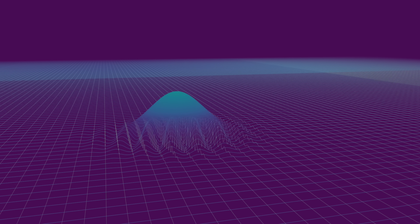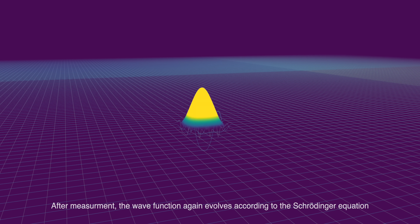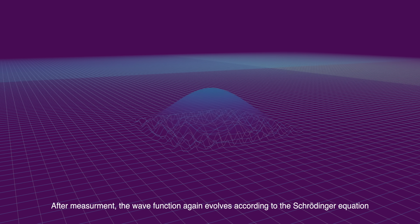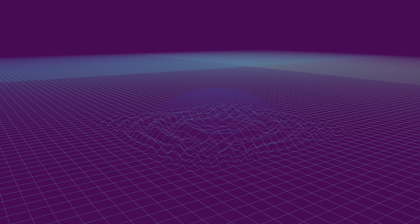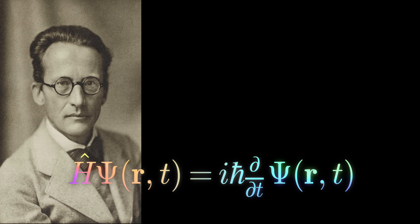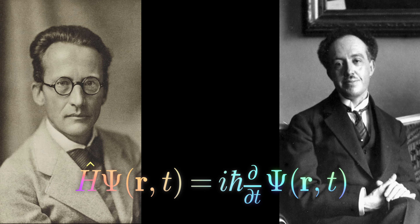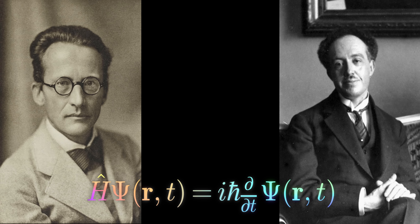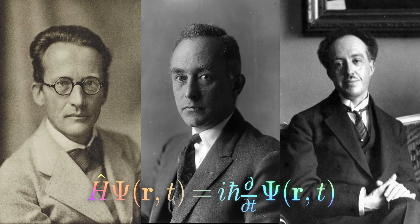I think it's understandable that when the founders of quantum theory approached this problem, they considered the measurement more real than the wave function. After all, the measurement was something we had actually observed, and it matches our experience of a world of matter particles. It was harder to say what the wave function was exactly. Schrödinger formulated his wave equation because scientists — notably de Broglie — suspected that matter has wave-like properties. But it took a third physicist, Max Born, to propose how we should interpret the wave function.